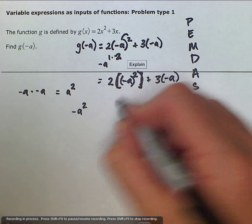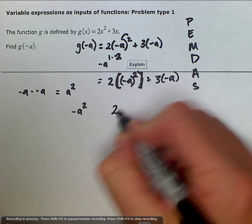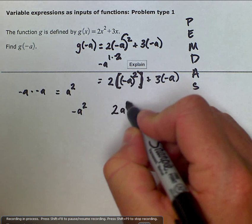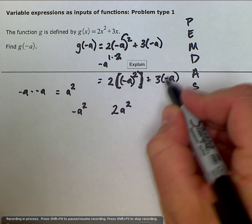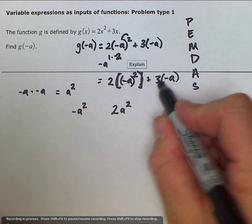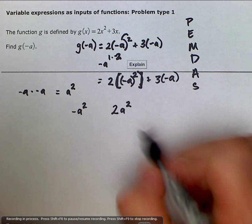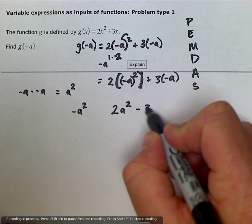We would rewrite this as 2 times a squared. And then our 3 times a negative a, 3 times negative a becomes a negative 3a. And that is our final answer.